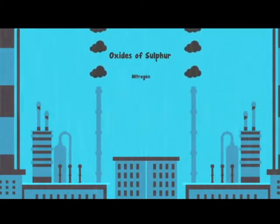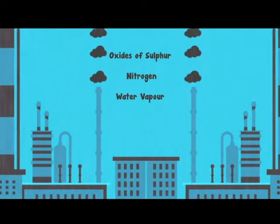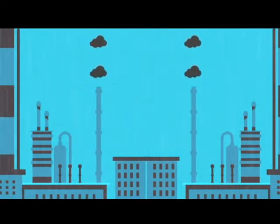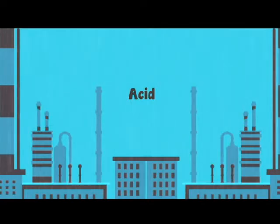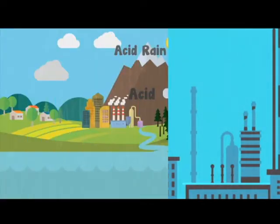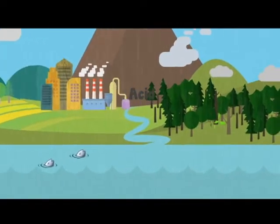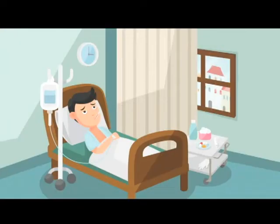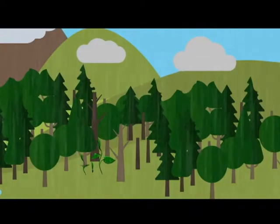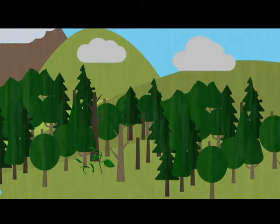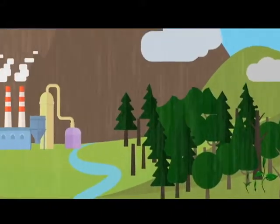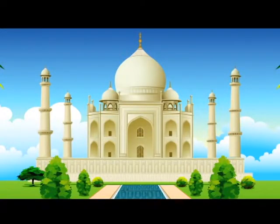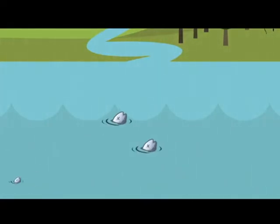Oxides of sulphur and nitrogen mix with water vapour in the atmosphere, forming harmful substances called acids, which condense to form clouds. Winds carry clouds with acid which later comes down as acid rain. Acid rain causes extensive damage to water, forest, soil and even human health. It also damages buildings, statues and monuments. When it enters lakes, ponds and other water bodies, it pollutes them, killing fish and other animals living in the water.